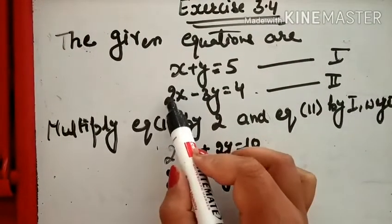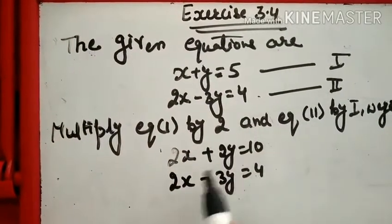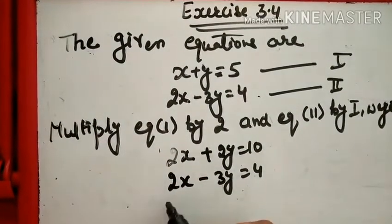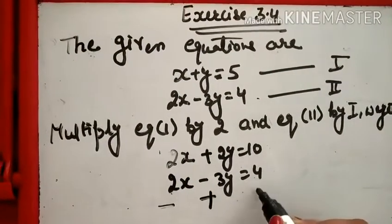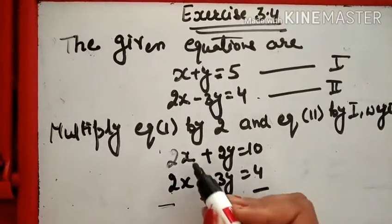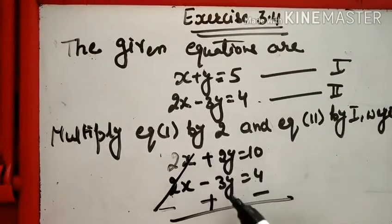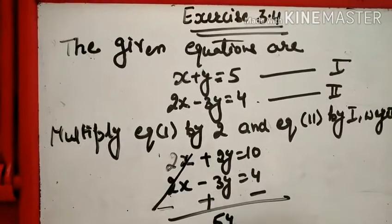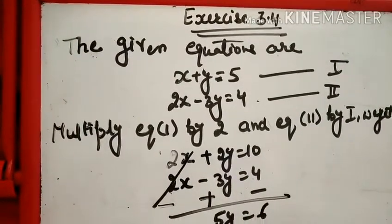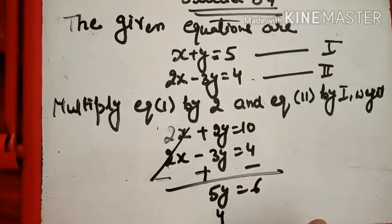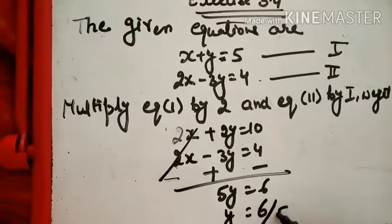इसको मैंने 2 से multiply किया: 2X, 2Y, and 5 twos are 10। अब इसके Signs change होंगे — plus है तो minus, minus है तो plus, plus है तो minus। यह X कट गया, अब only one variable रहा। Plus 2 और plus 3 is 5Y, and 10 minus 4 is 6।